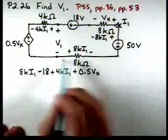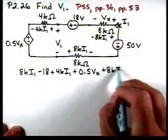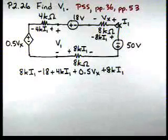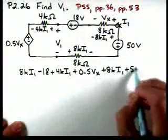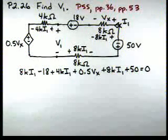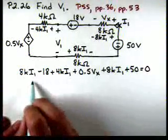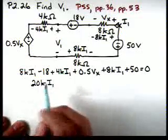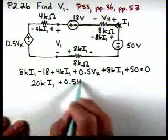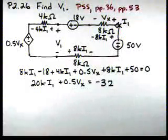If we come around, we have another voltage drop, 8Ki1 across that resistor on the bottom, and then one more voltage drop, so we have a plus 50 equal to 0. So there's our KVL equation. We've still treated that dependent source just like an independent source for the time being. Now let's simplify this equation. We'll have 20Ki1 plus 0.5VX is equal to minus 32.